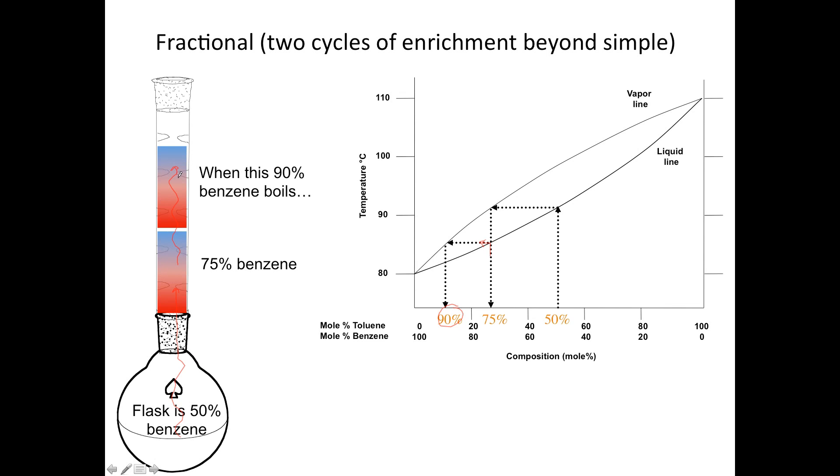This can happen again. Those vapors cool and condense and begin to roll back down. On the way, they meet hot vapors on the way up, and they boil. If you're boiling 90% pure benzene, it'll boil at a much lower temperature and give you vapors that are 97% pure. So again, this 90% pure benzene boils. The vapors are 97% pure. And these are the vapors that cool, condense, and you ultimately collect.